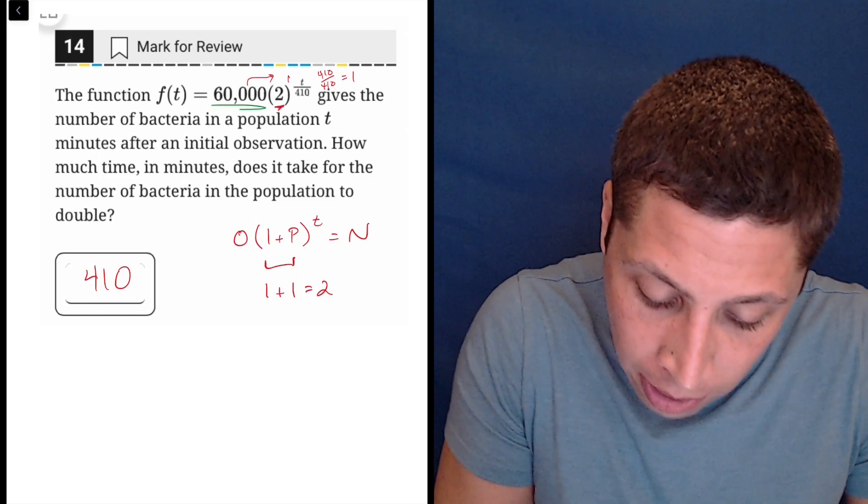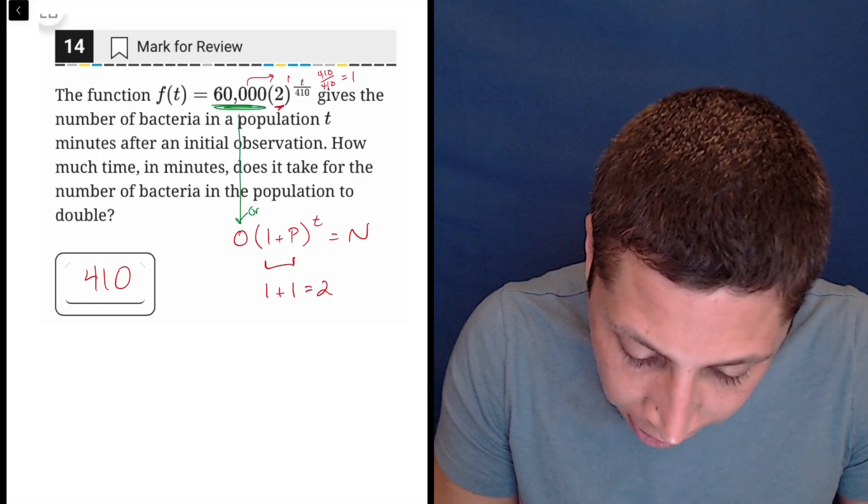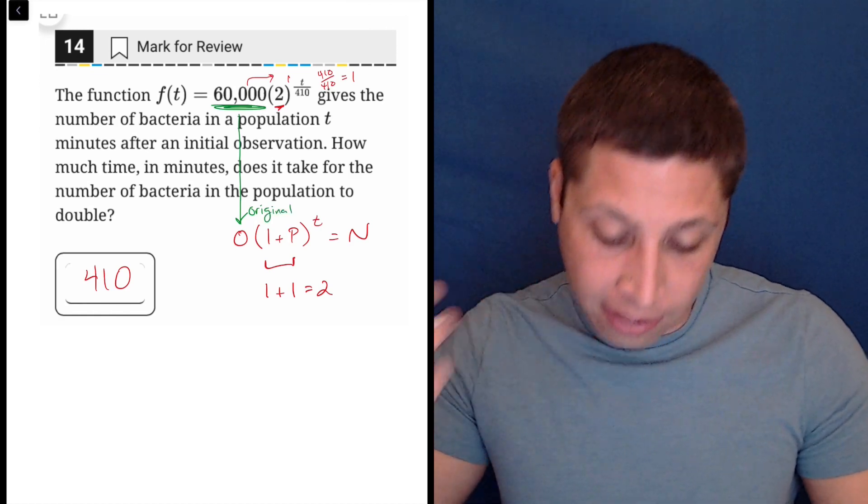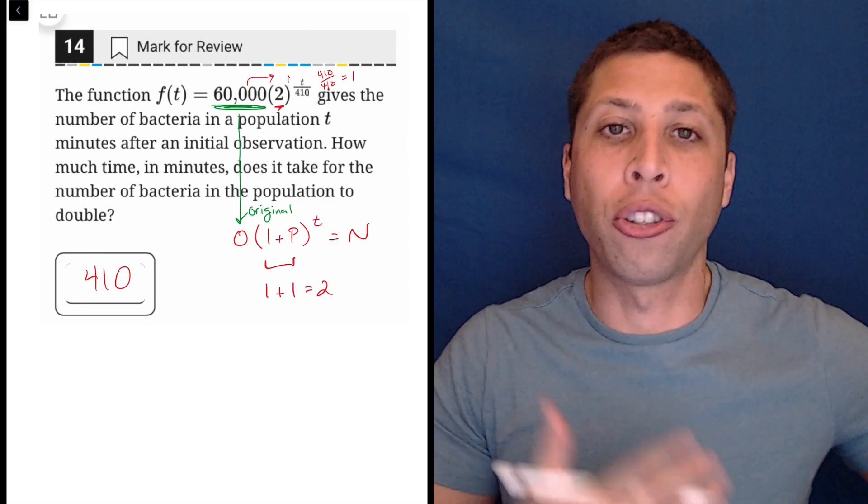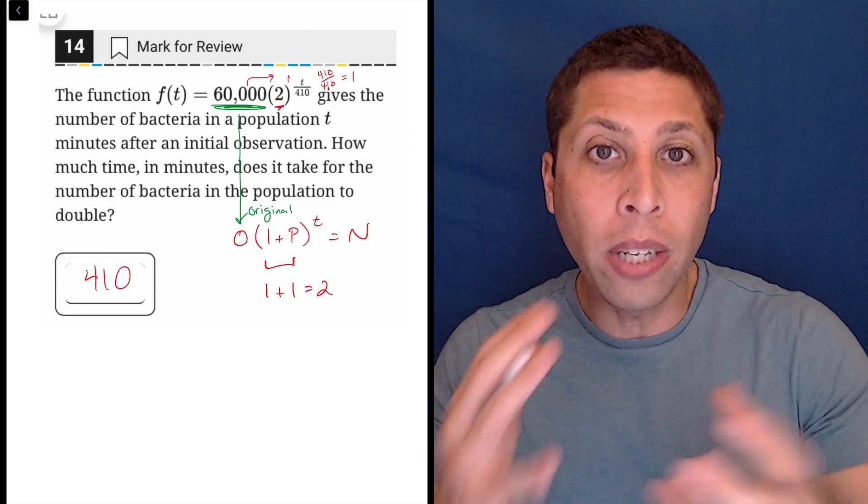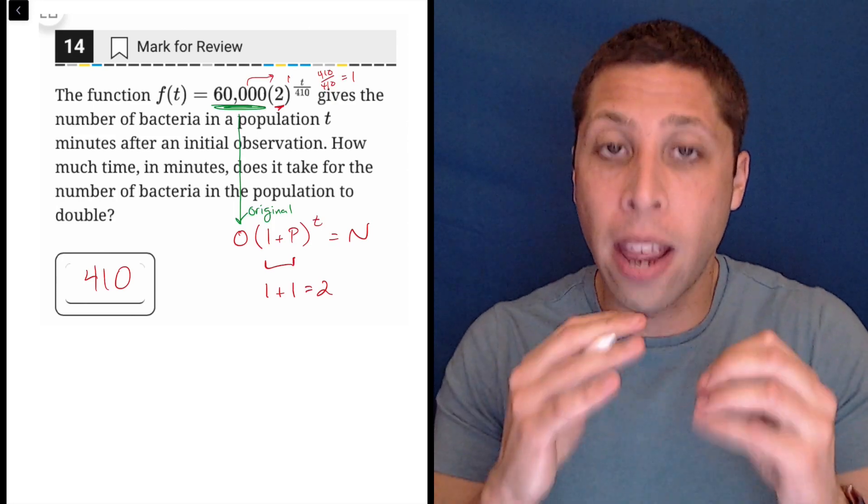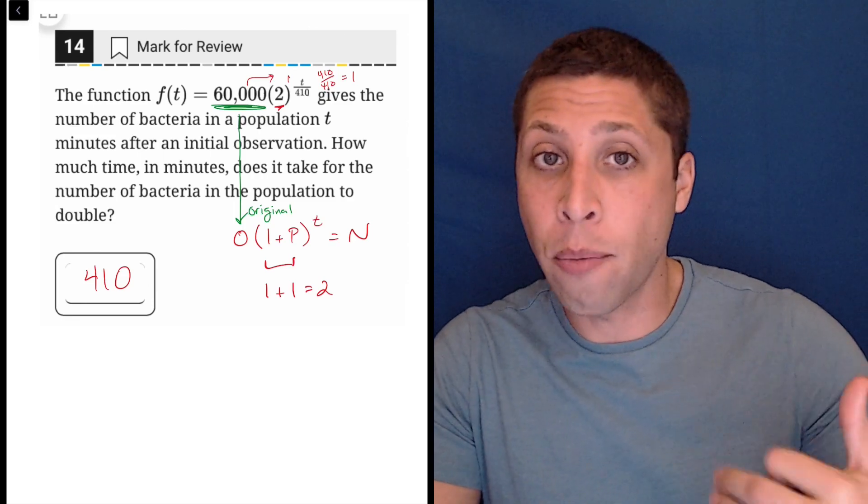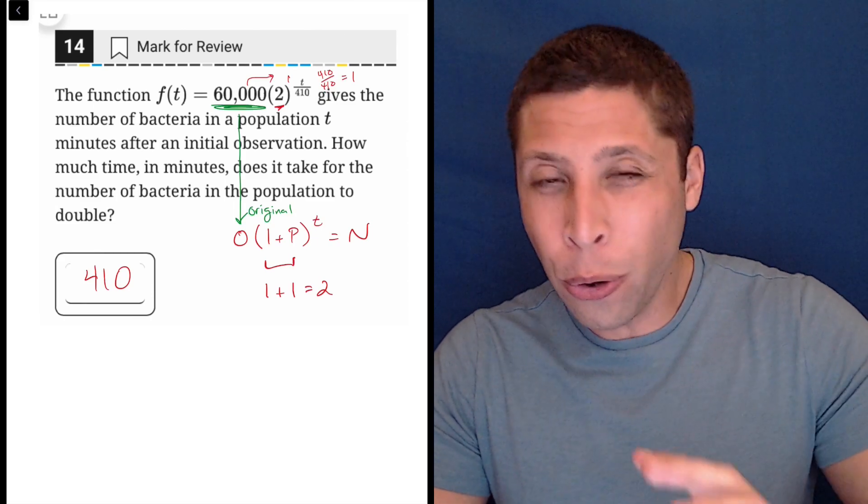And the reason I know that that's what I want to happen is the other part of my open formula tells me that the 60,000 is the O, or the original number. So it doesn't explicitly say that there are 60,000, but you need to understand the basic exponential setup so that you can read what the story is telling you based on the equation. They are telling you through this equation that there are 60,000 bacteria, and then we want to get to 120,000, doubling it.